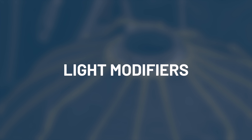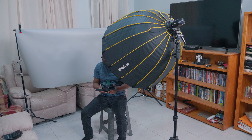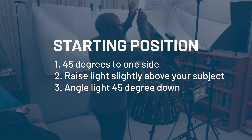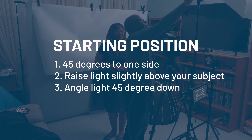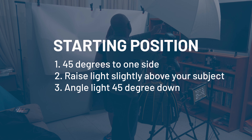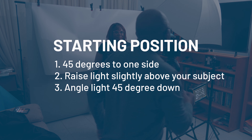Our second consideration is our choice of modifiers. There are a lot of them out there but we're just going to be looking at two: the simple umbrella and a parabolic softbox. In terms of placing your lights, a very simple rule to remember is that if you're going to be shooting from one side, a good place to start is 45 degrees to one side or the other, and you also lift your modifier up above your subject and angle the light down at 45 degrees.